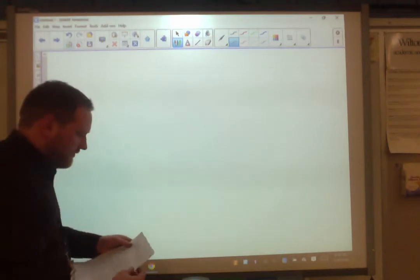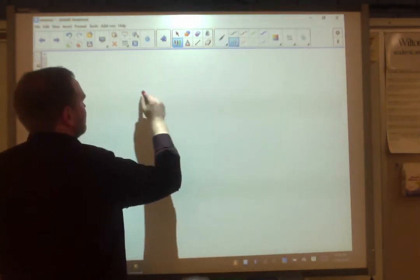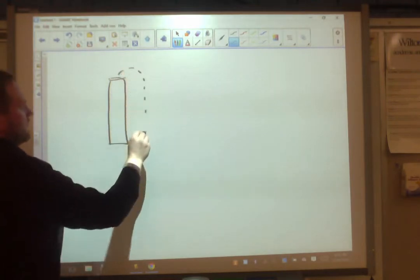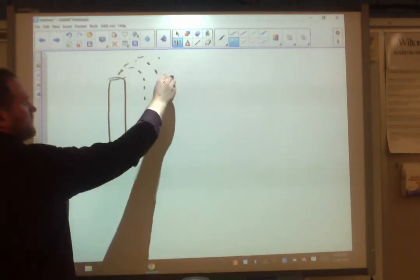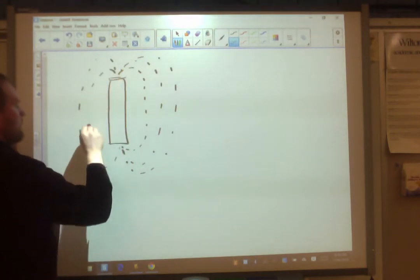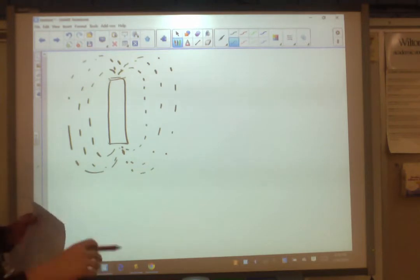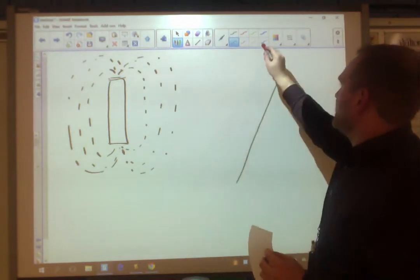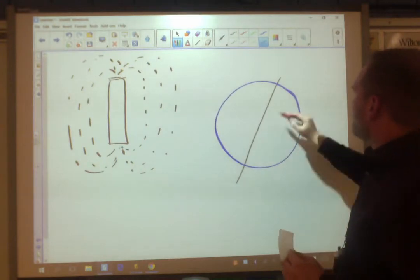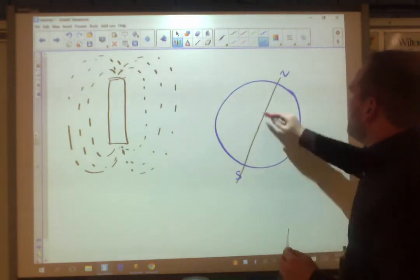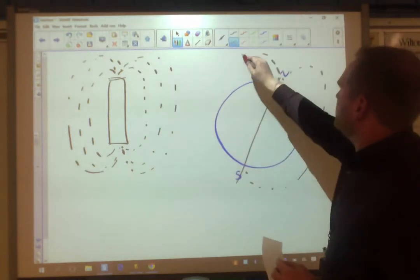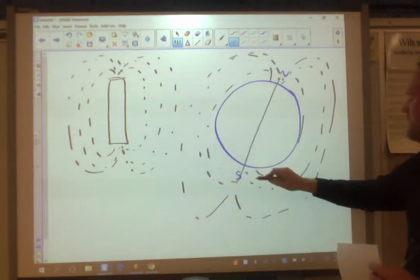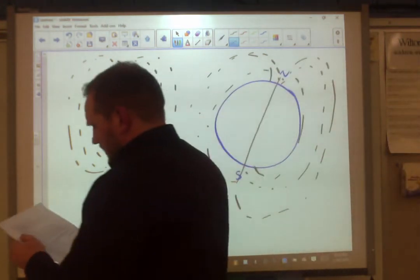Question number three, sketch the field around a bar magnet and around the Earth. Let me start with the bar magnet. We've done this before. The basic idea is like this. And we saw this when you dropped iron filings on it and made that same sort of pattern. For the Earth, we're going to tilt Earth on a 23 degree axis, 23.5. Here's my Earth, my North Pole, South Pole, and it makes the same kind of pattern like that.